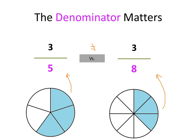Well, immediately, this is easy to tell that the 3 fifths is much larger than the 3 eighths, just by looking right here — you can tell this one's shaded blue and this one's not. It's quite easy to tell that 3 fifths is greater than the 3 eighths. But you can't draw a picture of pizza pies for every math problem, so let's see how to do it in mathematical language.